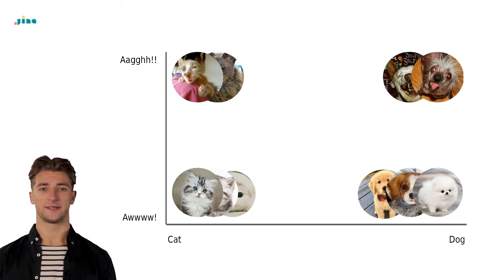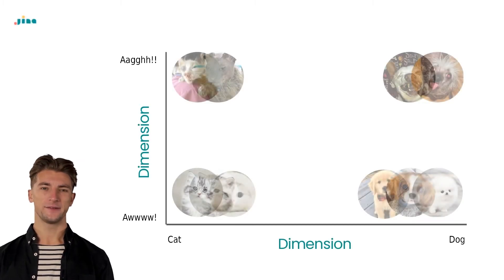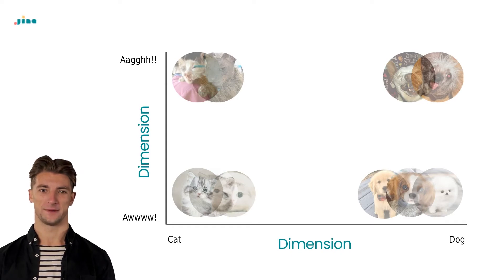Moving forwards, let's learn a few terms that are common in deep learning. First, we've got our dimensions. These are the criteria we use to determine where to place a piece of data on our graph. In this example, we only have two dimensions, but this can be any number, as we'll see later.